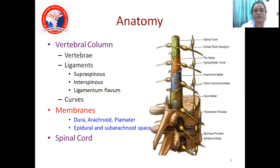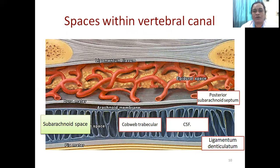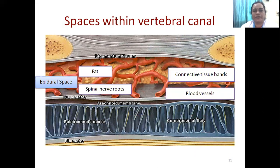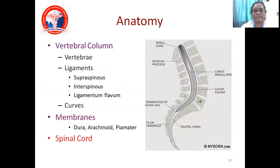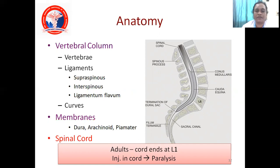These are the spaces — you have the ligamentum flavum, epidural space, and the cerebrospinal fluid, with blood vessels, fatty tissue, and spinal nerve roots. The spinal cord in the adult ends at L1. This is important for the anesthetist — since the cord ends at L1, you can give spinal anesthesia below this level without damaging the spinal cord.